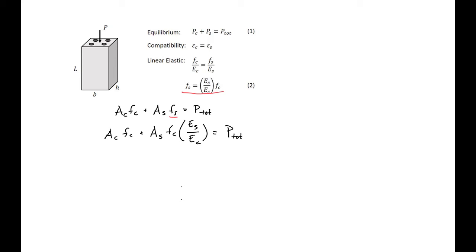Next we will factor out our FC, so we'll get AC plus AS times ES over EC, all times our FC, equal to our P total.